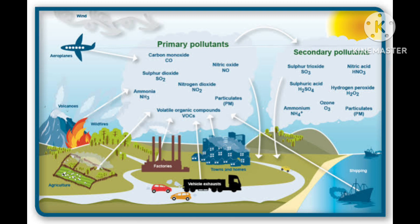Now I am going to discuss smog. The word smog is derived from smoke and fog — combining both terms. This is the most common example of air pollution that occurs in many cities throughout the world. Smog is of two types: first is classical smog, and second is photochemical smog.